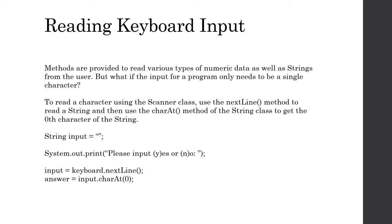We've seen methods for numeric data types and an example of the nextLine method for getting a String of user input. But you might notice that there's a particular data type conveniently missing from the set of methods — that would be for characters. So what exactly should we do if we want to get a single character of input from the user? If we want to read a single character using the Scanner class, we can use the nextLine method to read an entire String, and then use the charAt method of the String class to get whichever character we're interested in — most likely charAt(0), the first character.